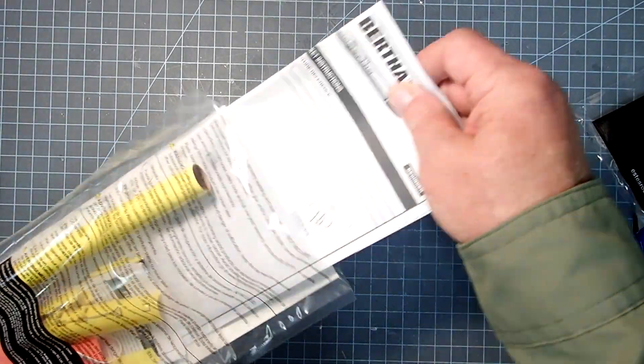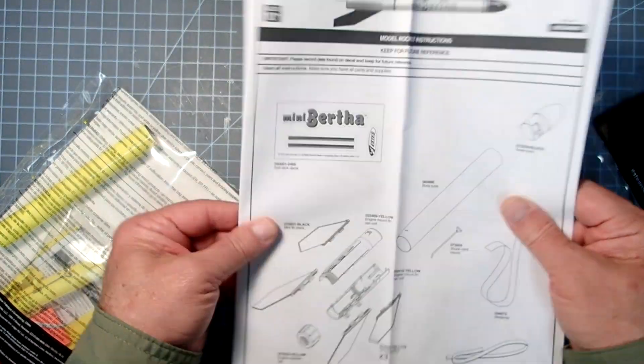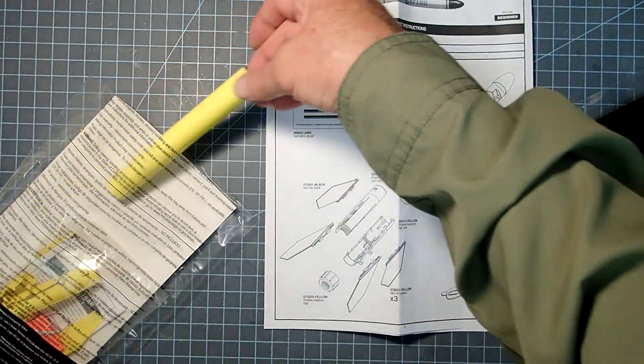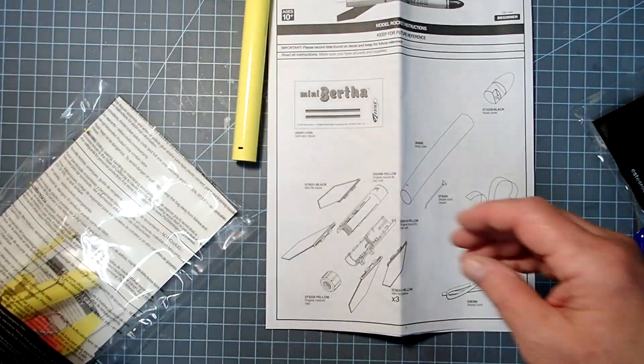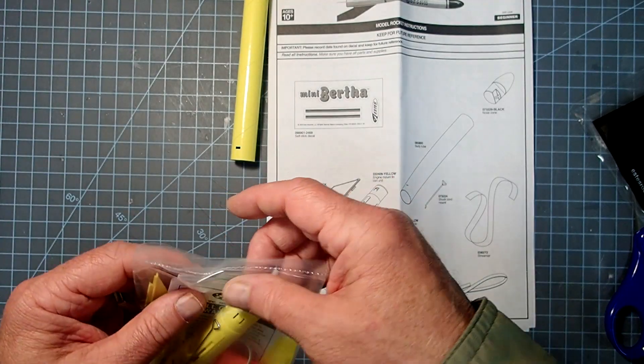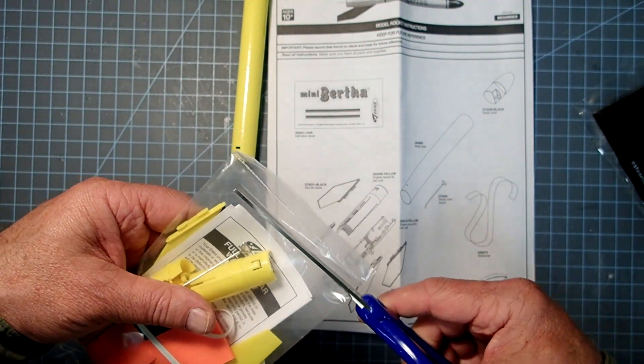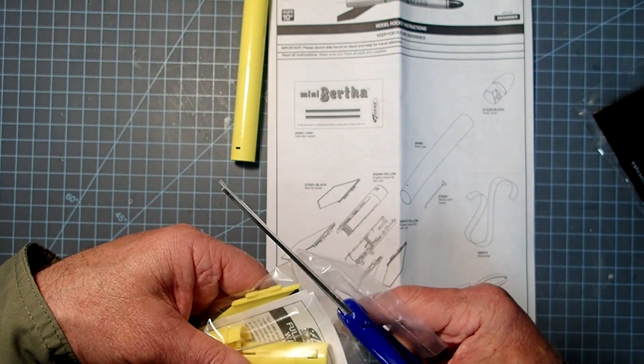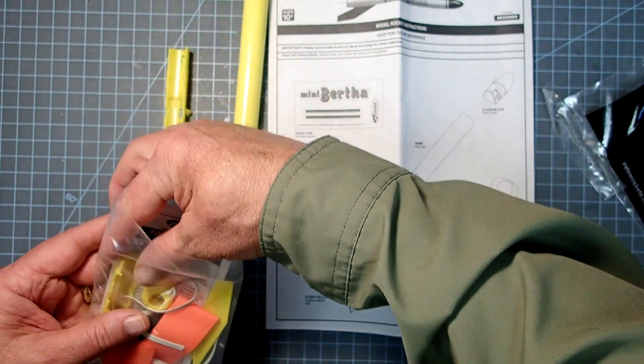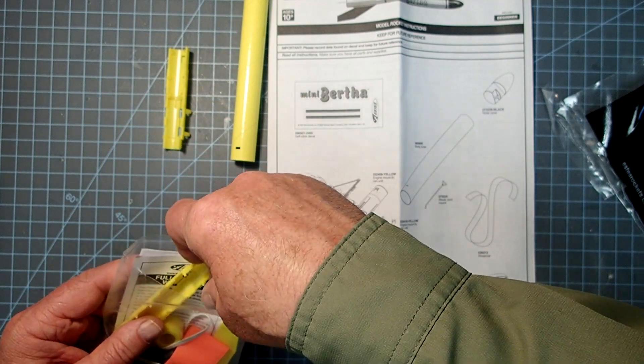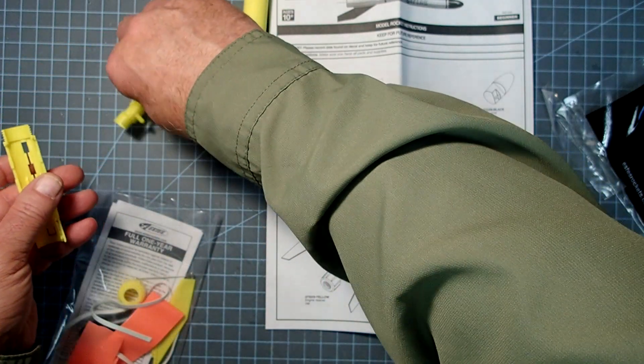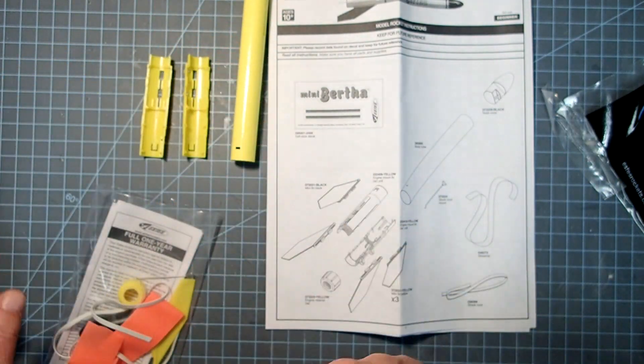So let's go ahead and pull out our instructions and make sure we have all of the parts here. We've got a pre-colored yellow body tube here, and then everything else is in the small parts package. We'll go ahead and cut this open. We've got two halves of a fin can. If you've ever built the Starhopper model, this is going to look very similar.